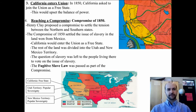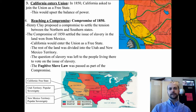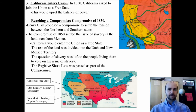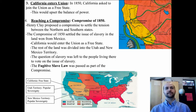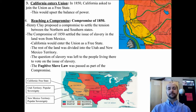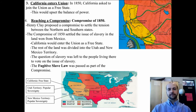Henry Clay proposed a compromise to settle the tension. The Compromise of 1850 allowed California to enter as a free state, while the rest of the land was divided into Utah and New Mexico territories, where the question of slavery was left to the people living there. This popular sovereignty approach opened up problems, as voting was never truly fair. The Compromise also included the Fugitive Slave Law, which created a great deal of tension between the North and the South.